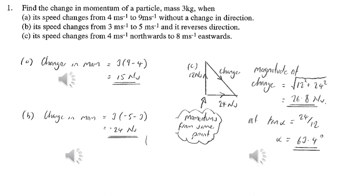We can solve part C by using an impulse-momentum triangle. We calculate the initial momentum and the final momentum, starting from the same position, and then the impulse — or the change of momentum — connects the end of the initial momentum to the end of the final momentum. Once we've got the triangle, we can just apply Pythagoras and right-angled trigonometry.